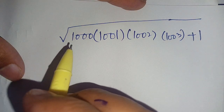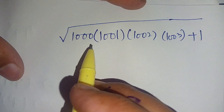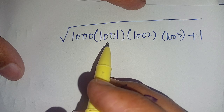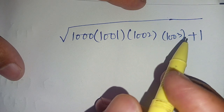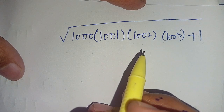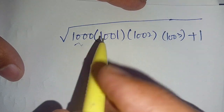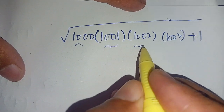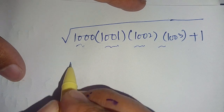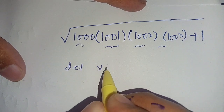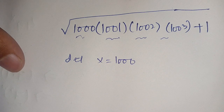Hello everyone. In today's video we are going to solve the square root of 1000 times 1001 times 1002 times 1003 plus 1, without using any calculator. Here we see that these numbers are consecutive numbers. Let x be equal to 1000.